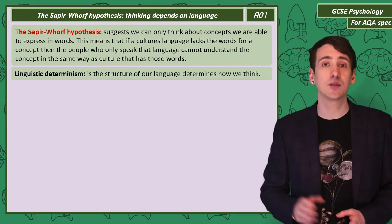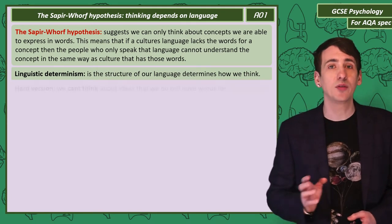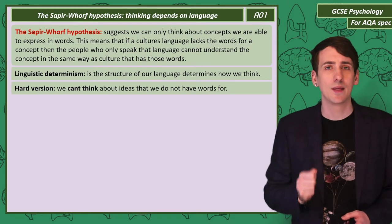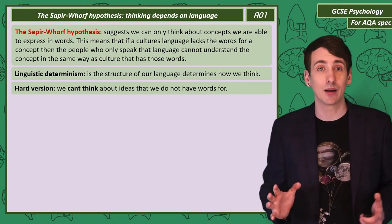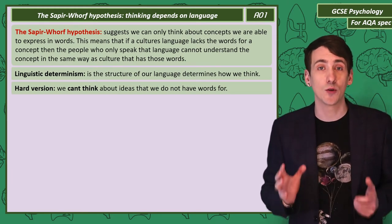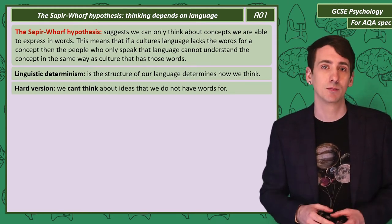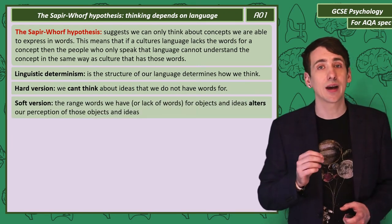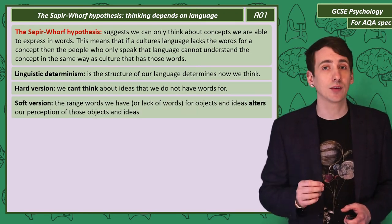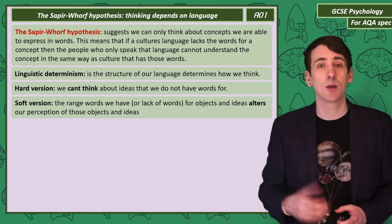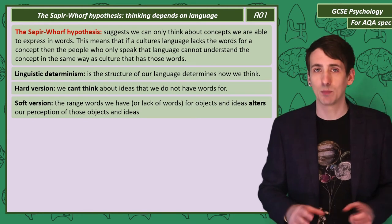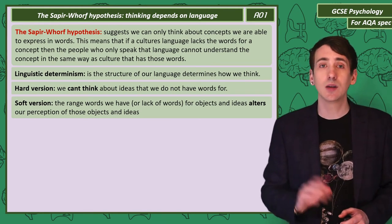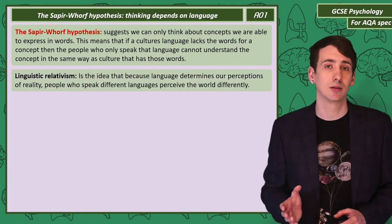Linguistic determinism has two varieties. The hard version suggests that without the words, I can't even think about the idea that the word represents. The soft version suggests that the range of words I have for objects changes our perception of them. Let me give you some examples to show what I mean.